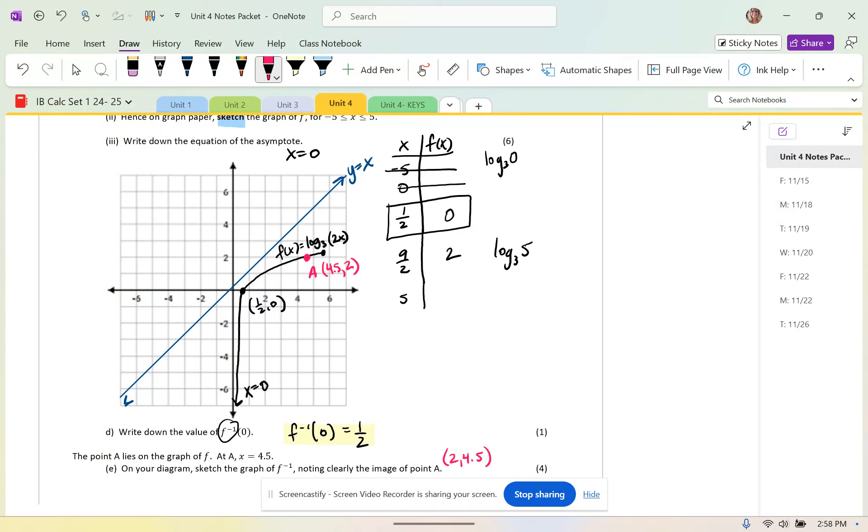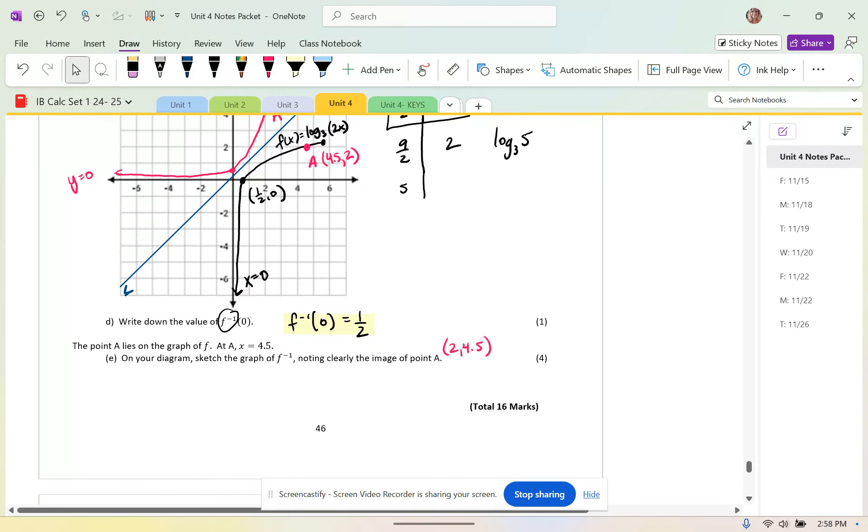So then the reflection is going to look like this. I've got 0, 1 half. And then I've got a horizontal asymptote of y equals 0. And then we're also passing through the point 2, 4.5. So 2 and then 4.5. And this is the image of A. On your diagram, sketch the graph of the inverse. I did not label it. Noting clearly the image of the point of A. I did it.